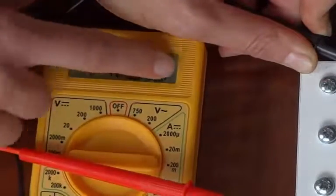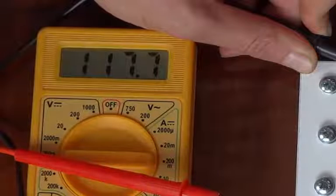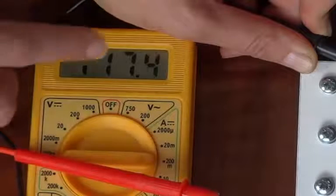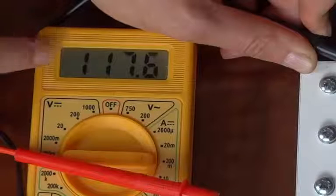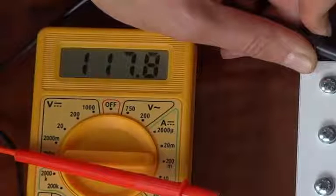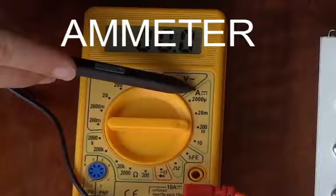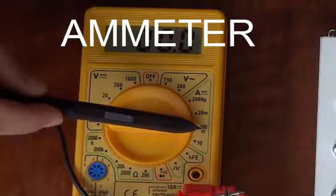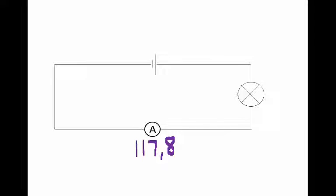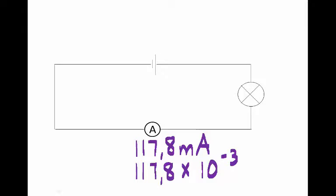We can see the value here is changing, and that is quite to be expected. So don't worry about that. So it's quite difficult to decide what to take as the reading. Let's say 117.8. Now what's the unit? We are using this as an ammeter, and we are using it in the milliampere range. So this reading of 117.8 has the unit milliampere. If we want to convert that into amperes, we simply multiply by 10 to the power minus 3 because that's what milli means.